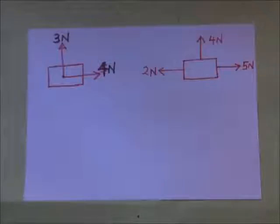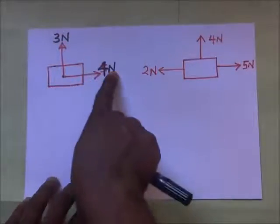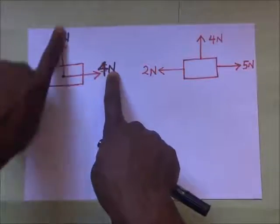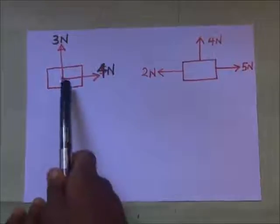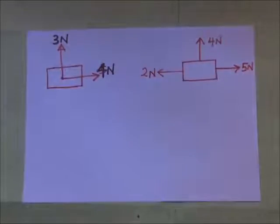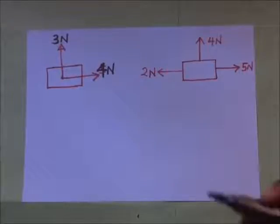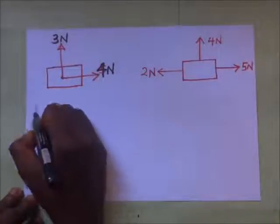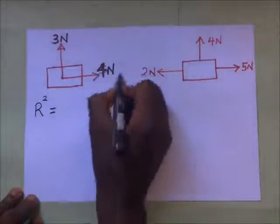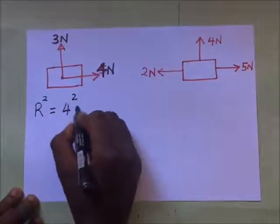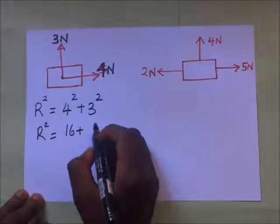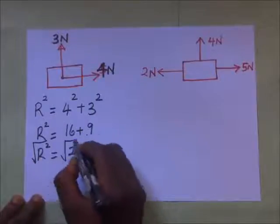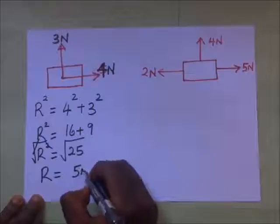Sometimes the forces may not be parallel — they may be perpendicular. For example, we have a 4 newton force acting in one direction and a 3 newton force acting upward, meeting at 90 degrees. To find the resultant force, we use the Pythagorean theorem. The resultant force squared equals 4 squared plus 3 squared, which is 16 plus 9, giving R squared equals 25. Therefore, our resultant force is 5 newtons.